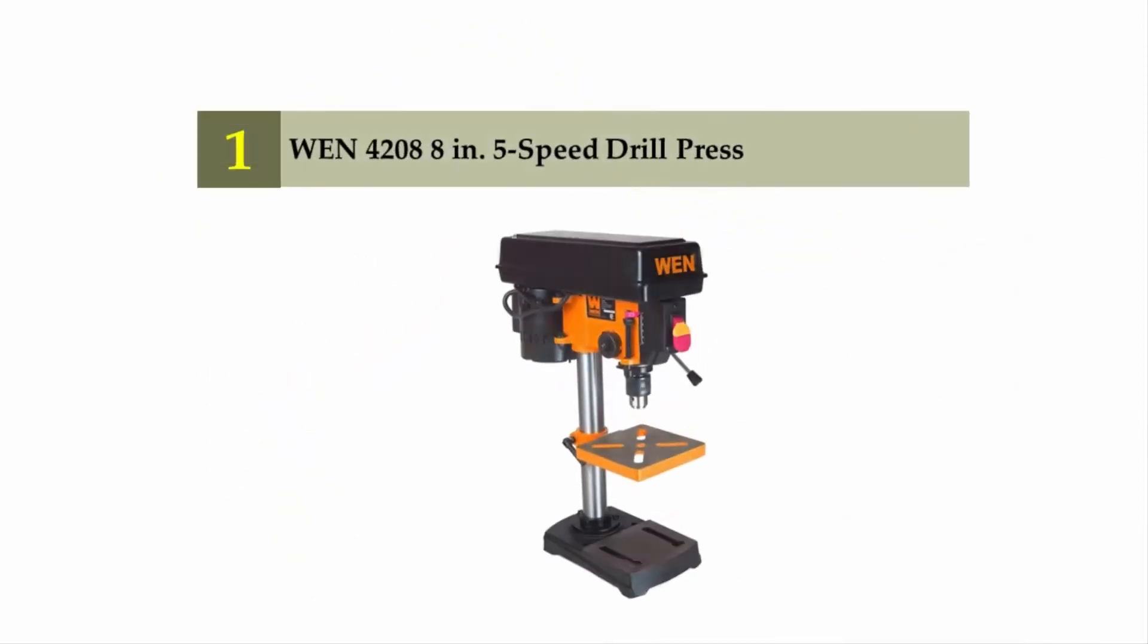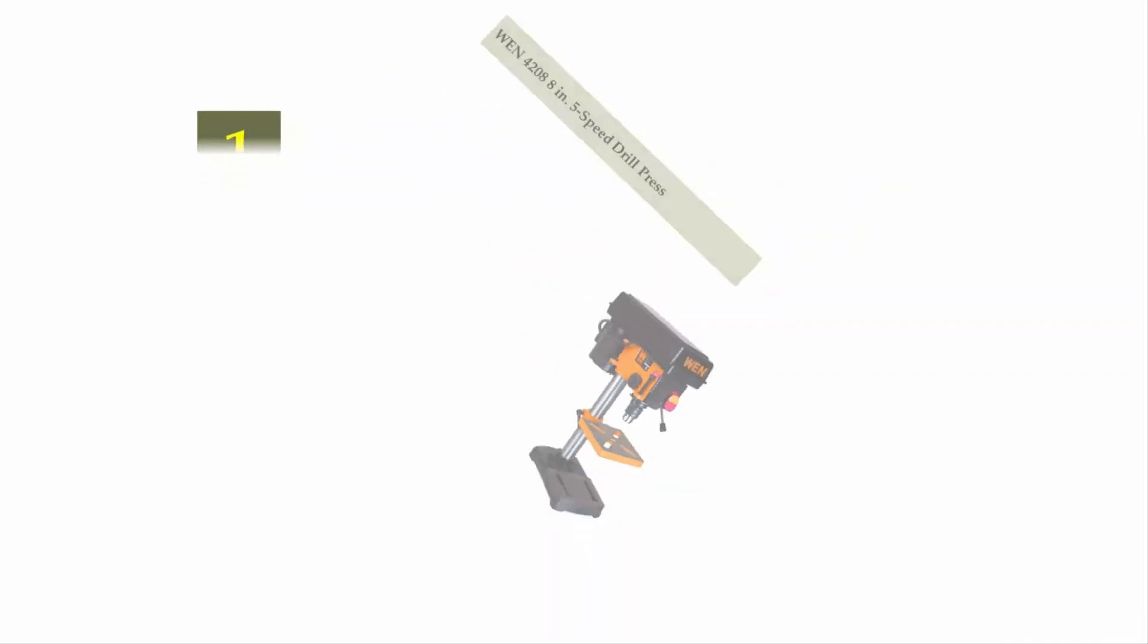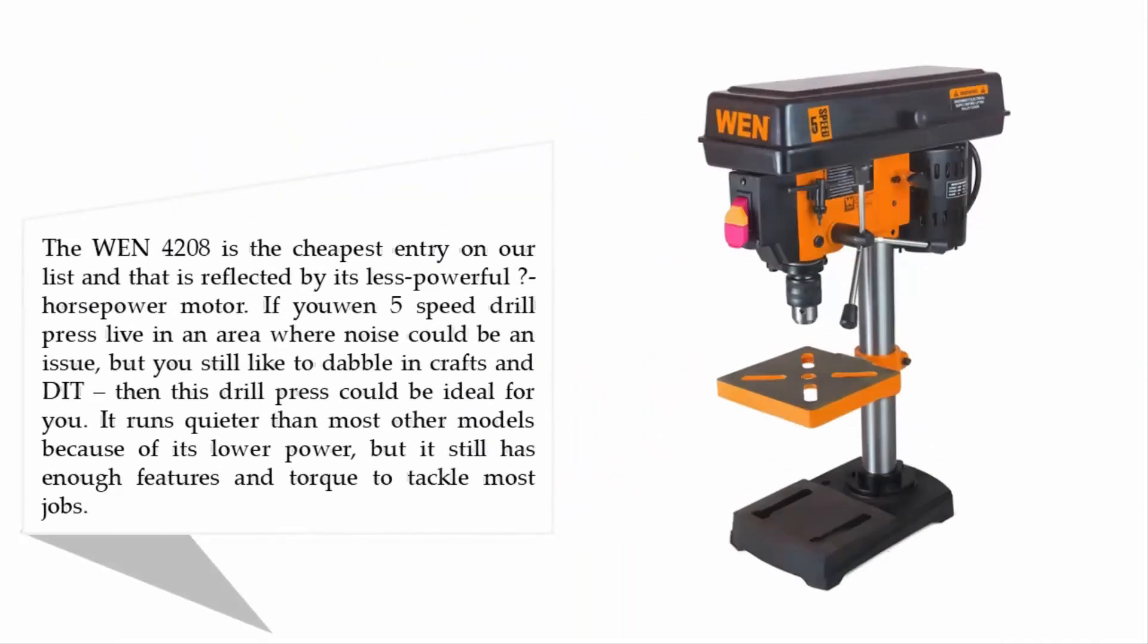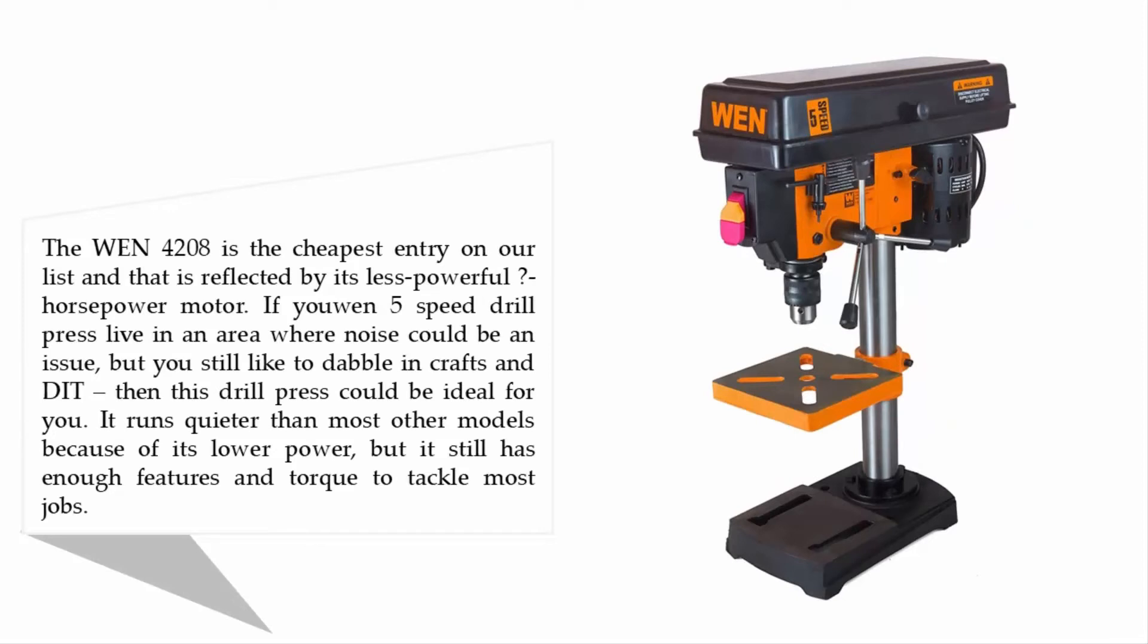Coming in at number one on our list: WEN 4208, 8-inch, 5-speed drill press. The WEN 4208 is the cheapest entry on our list and that is reflected by its less powerful horsepower motor.